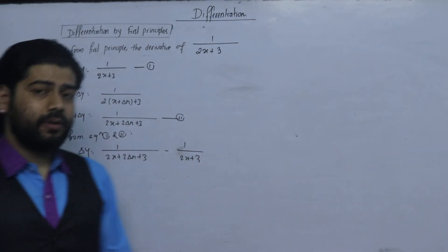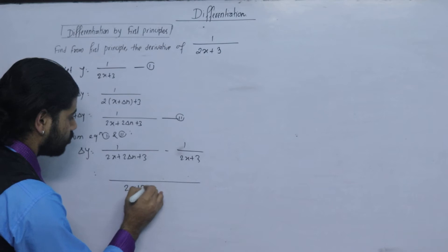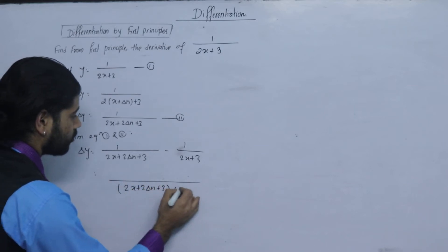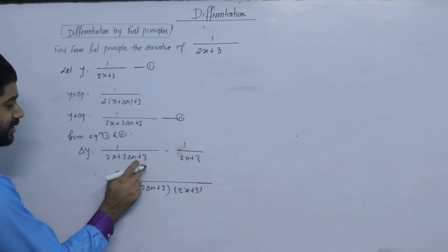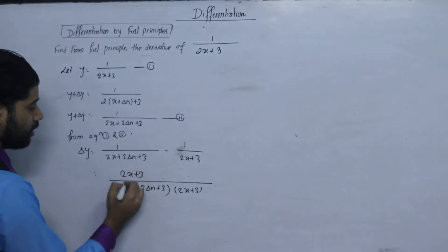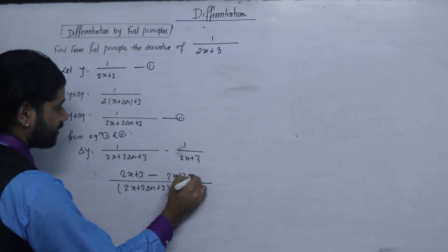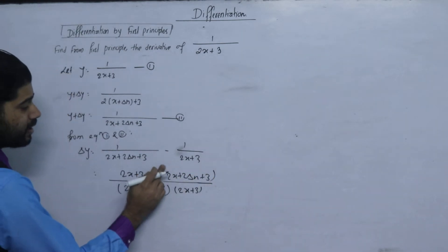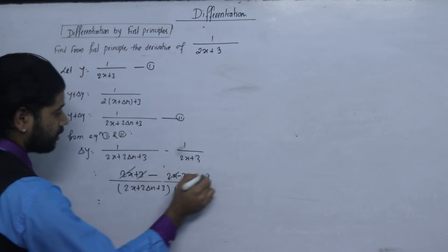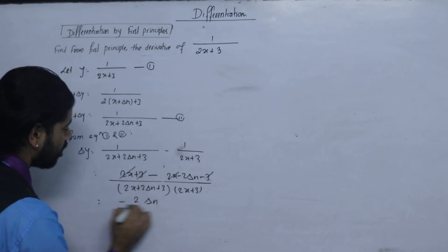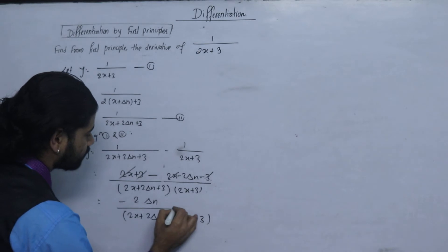Now we take delta x common and find the LCM. The LCM is (2x plus 2 delta x plus 3)(2x plus 3). The numerator becomes: minus(2x plus 3) minus minus(2x plus 2 delta x plus 3), which simplifies to minus 2 delta x in the numerator.